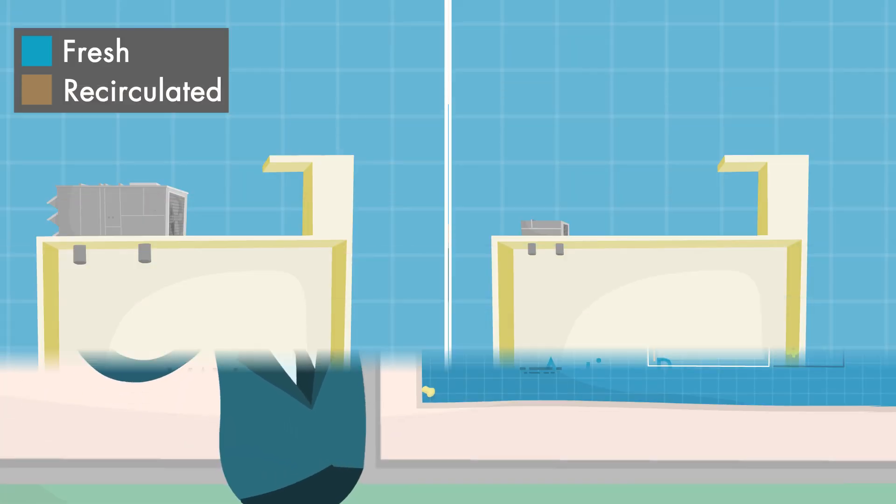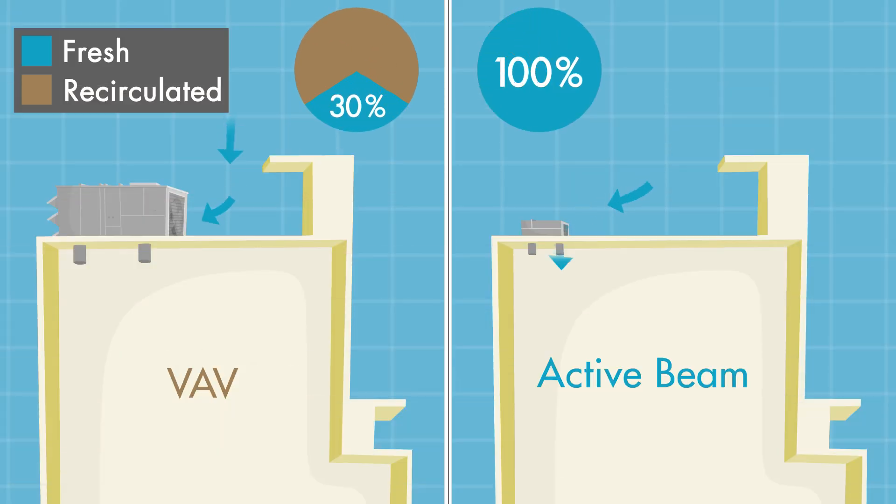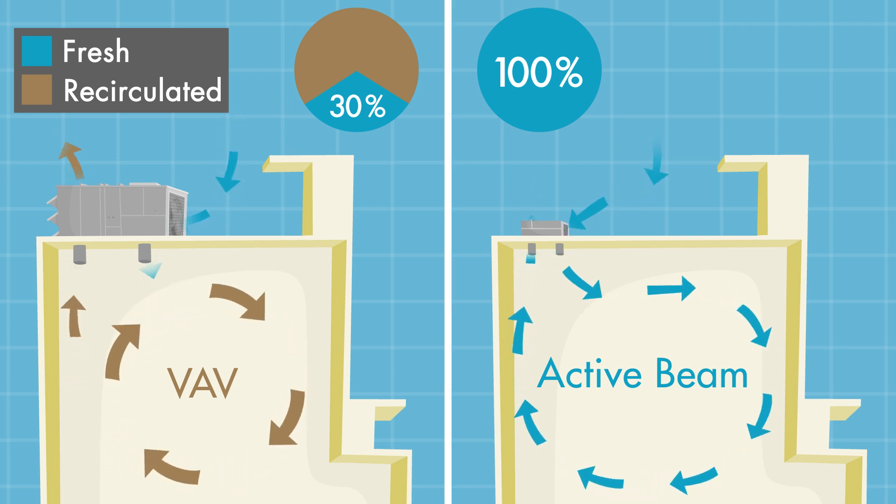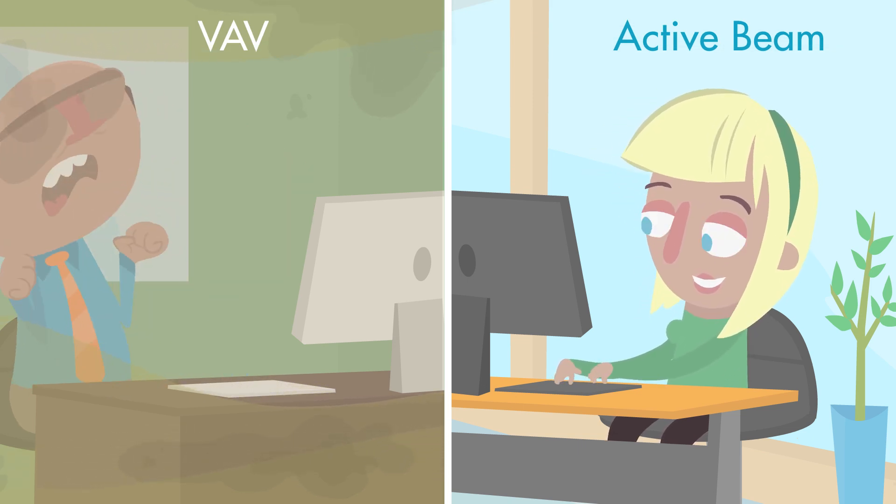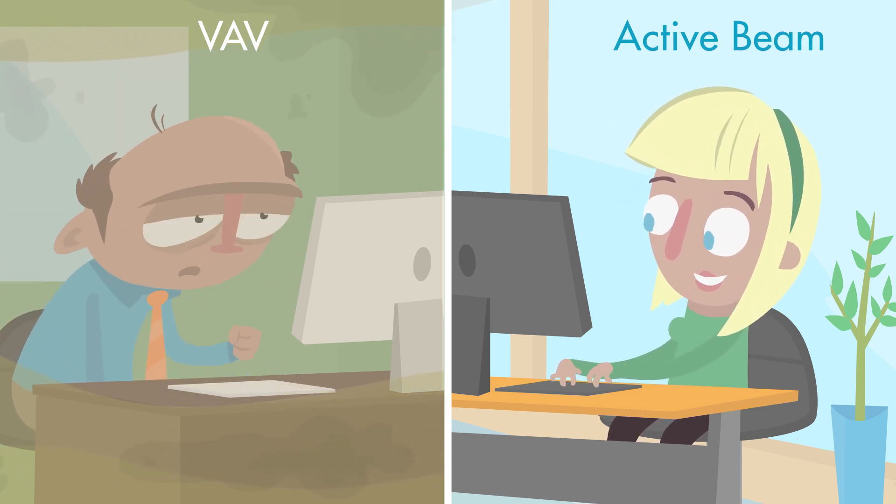Third, because the total volume of air distributed is fairly small, it can be comprised of 100% outside air. This offers a fresher tenant environment, with no more stale air being recirculated through the building.